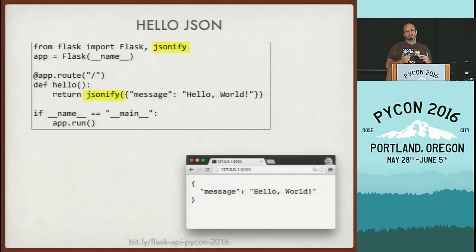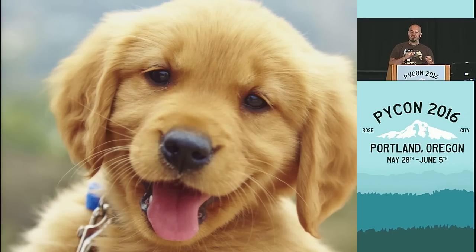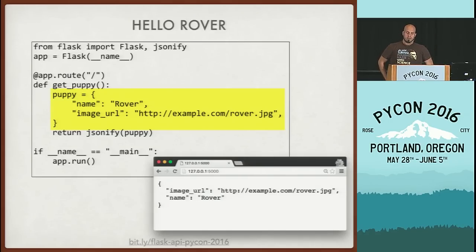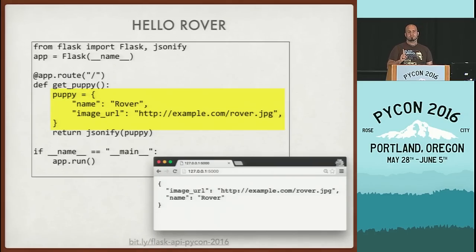Let's think of some idea that we can put into our API that makes it a little more compelling. I love puppies — they're super cute, and there are way too many kitties on the Internet and not enough puppies. So we're going to build a puppy API. Here is our basic puppy API — it's going to return some information about Rover: his name and a URL where the user can visit to get a picture of Rover. But it's an API that only returns information about one specific puppy.